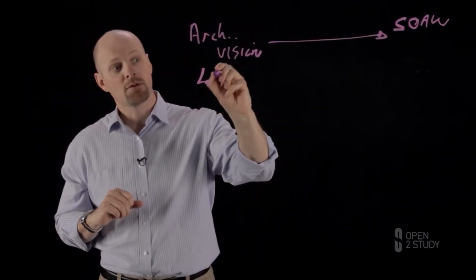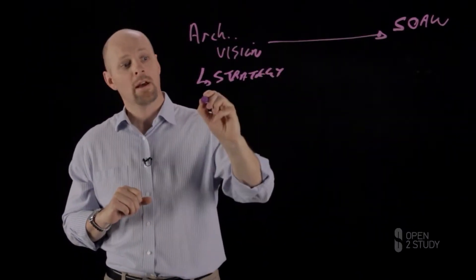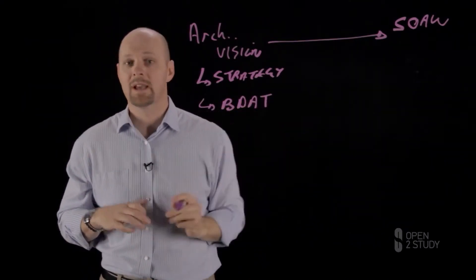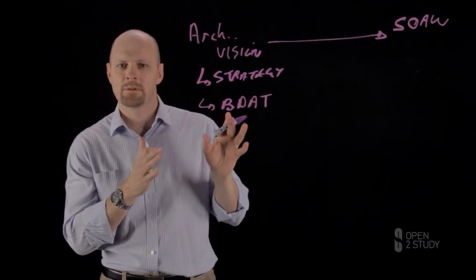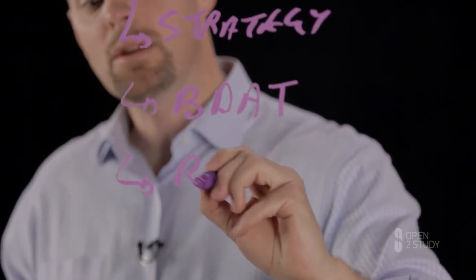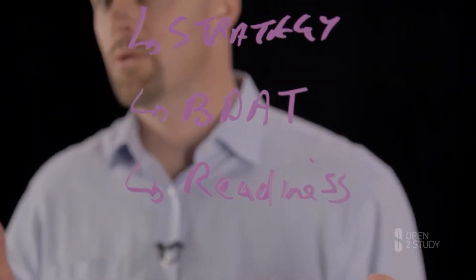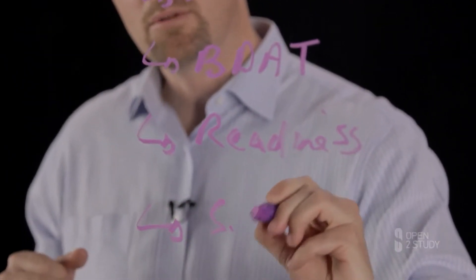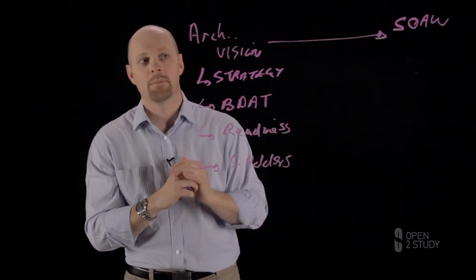The architecture vision looks at what the strategy of the organization is and what you're trying to achieve through this iteration. It takes a light touch at the business domains, using the concept called BDAT: business, data, application, and technology. It looks at readiness or change readiness—how ready is the business to accept these changes and are we biting off more than we can chew. It also looks at stakeholders within this particular scope and wraps all of this research up into an architecture vision.